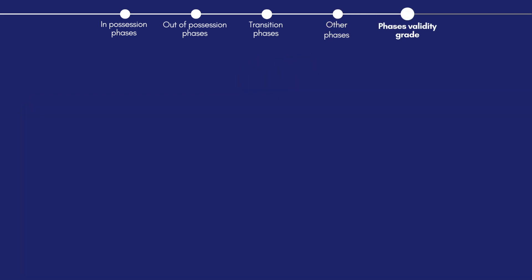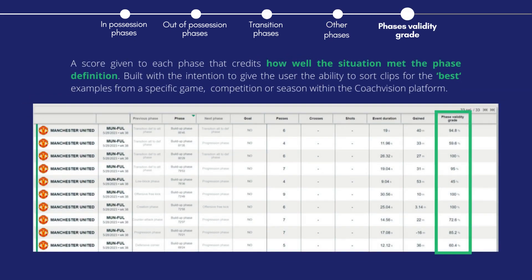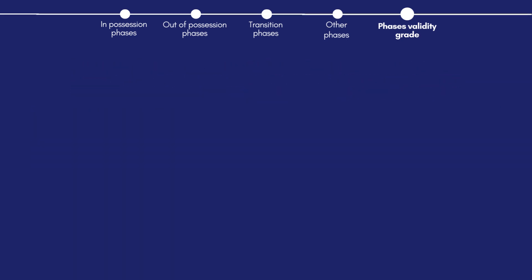Finally, we have developed a method of rating how well any given phase is executed by benchmarking a game situation against Footovision's definition of that phase. This allows users to find the most successful phases of their opponents or their own team's play from a specific game or season.